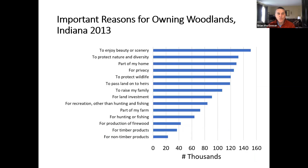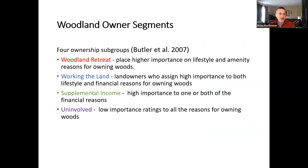Another thing we can look at is why someone owns woodlands. These are similar questions and categories to those used in the national woodland owner survey. A lot of the reasons that are important to people about woodlands relate to beauty, scenery, nature, and wildlife. Timber and other consumptive uses are really pretty low on the list when it comes to woodland owners. There have been efforts to take all this demographic information and values about woodland owners and combine them into a simple dataset to identify clusters or segments that you can target information to.